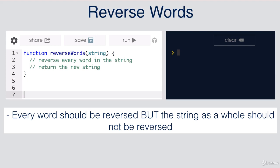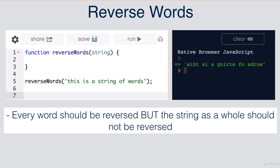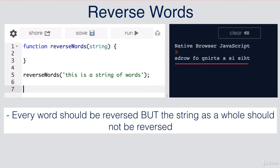So, for example, if we pass in the string 'this is a string of words', the result should be this. Notice how the words are still in the same order, but each word itself is reversed. We should not get this string, because that would mean the whole string has been reversed.